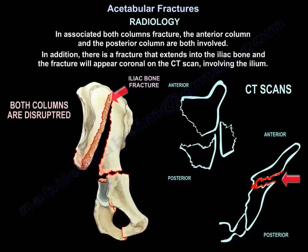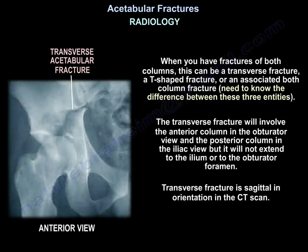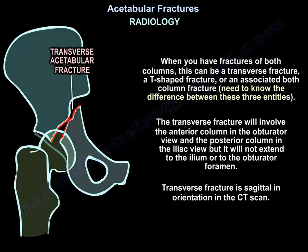You need to recognize both column fractures on x-ray and CT. In associated both column fracture, the anterior and posterior columns are both involved, and there is a fracture extending into the iliac bone. When you have fractures of both columns, it can be a transverse fracture, a T-fracture, or an associated both column fracture — and you must know the difference between these three entities.